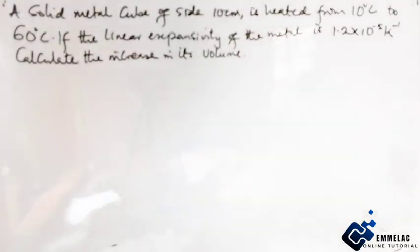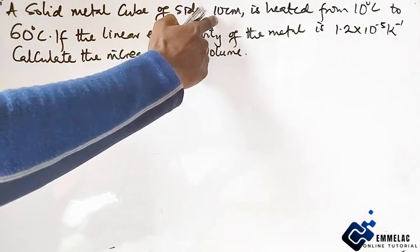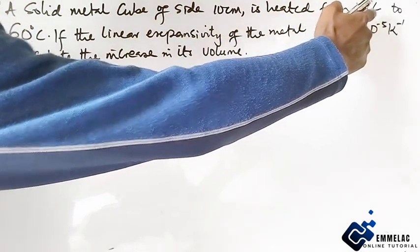Welcome to Emilak online tutorial. Before us today is this question on linear expansivity. Now let's see how to get this done. A solid metal cube of side 10 centimeters is heated from 10 degrees centigrade to 60 degrees centigrade.